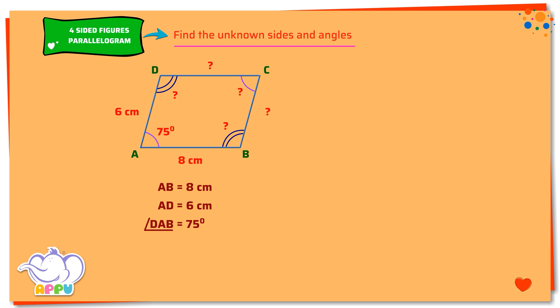Let's find the sides CD and BC. We know that a parallelogram has opposite sides equal. Length of CD equals length of AB, that is equal to 8 cm.